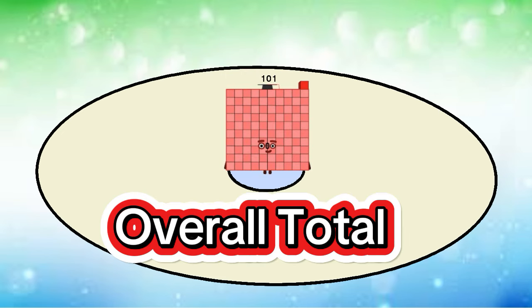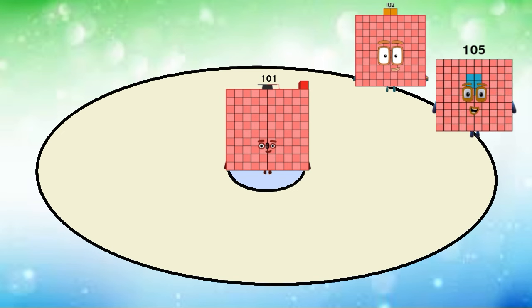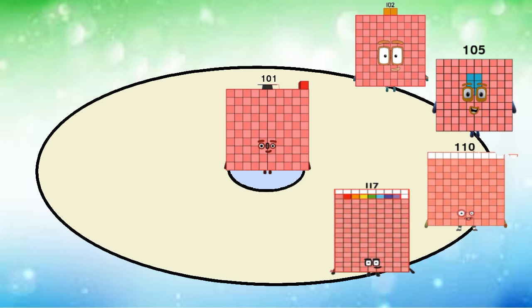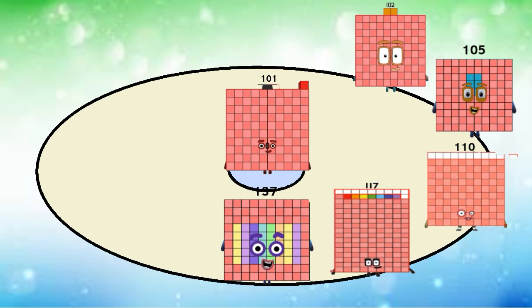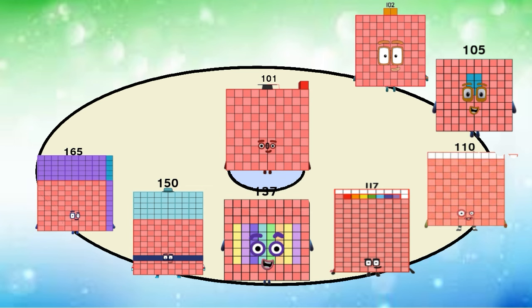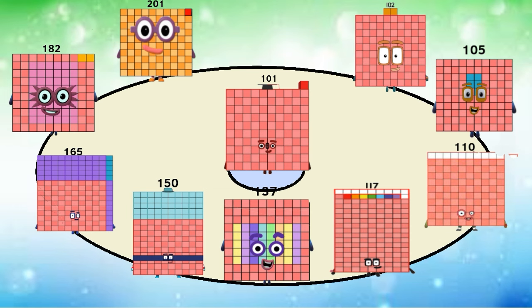Overall total: One hundred two. One hundred five. One hundred ten. One hundred seventeen. One hundred thirty-seven. One hundred fifty. One hundred sixty-five. One hundred eighty-two. Two hundred one. Two hundred twenty-two.